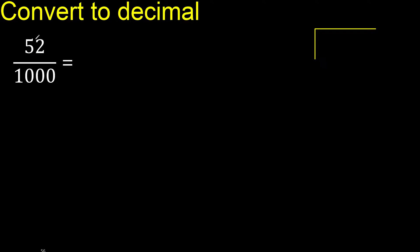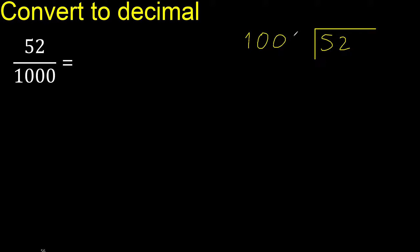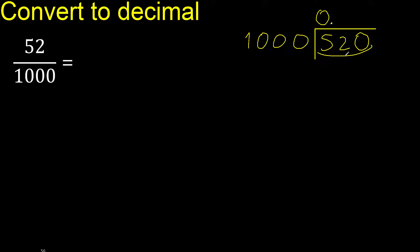52 divided by 1000. 52 is less, therefore complete — always complete with 0. Here: 0 point. Is less, so 0 — write the decimal point only once.